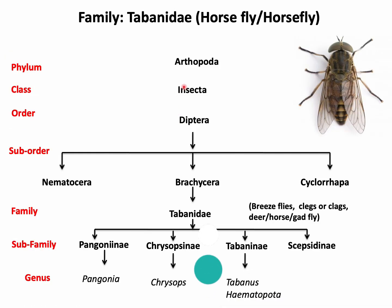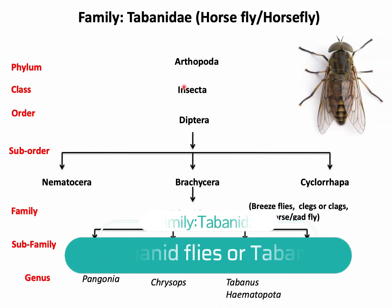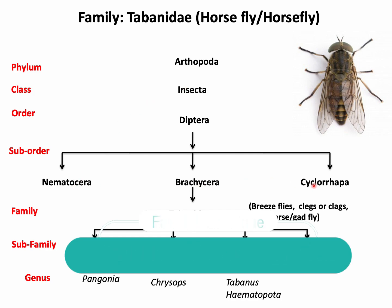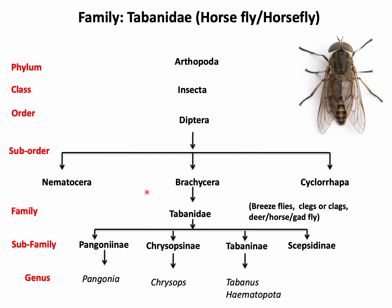We study different arthropods under the suborders Nematocera, Brachycera, and Cyclorrhapha. Under the suborder Brachycera, Tabanidae is an important family. Flies under this family are called Tabanids, and they are popularly known as bris fly, clegs, or horsefly.